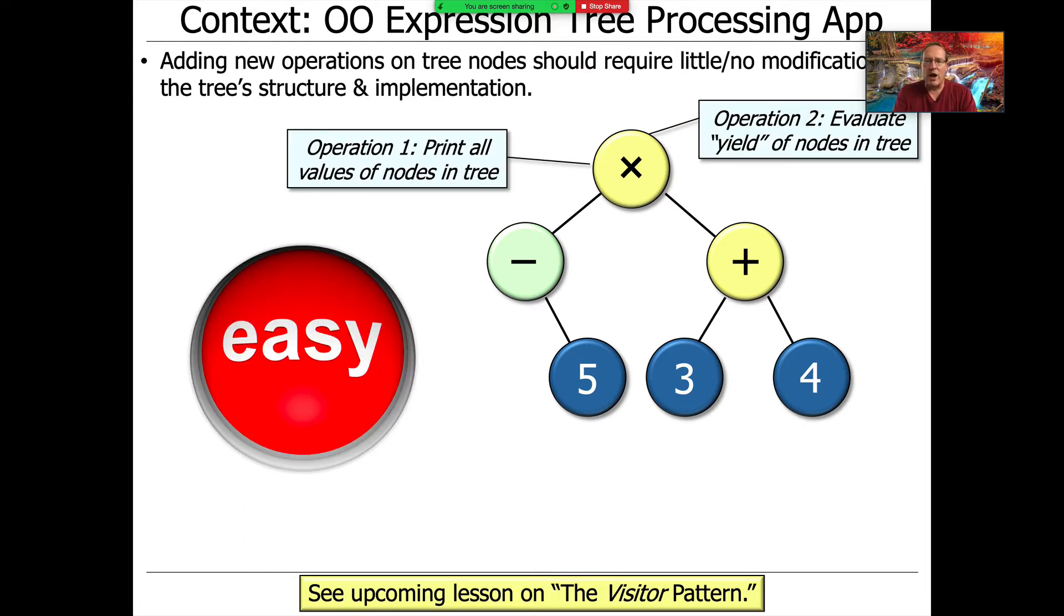Moreover, we want to be able to add new operations on our tree without having to change anything about our design, without having to change anything with our implementation. Now, of course, the new operations will have to be defined afresh, but we don't want to have to change the interfaces. We don't have to change the code we've already written. And that's the holy grail of good software design, to be able to make changes, add new capability, without perturbing anything that's already there, or perturbing it in the most minor, imaginable way.